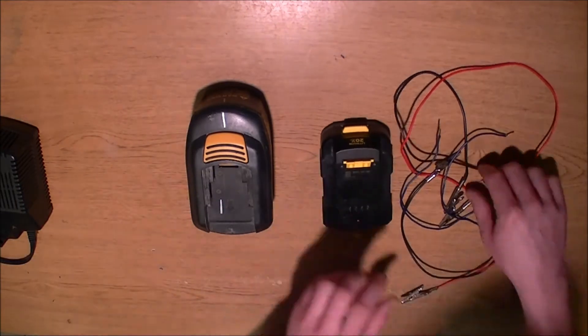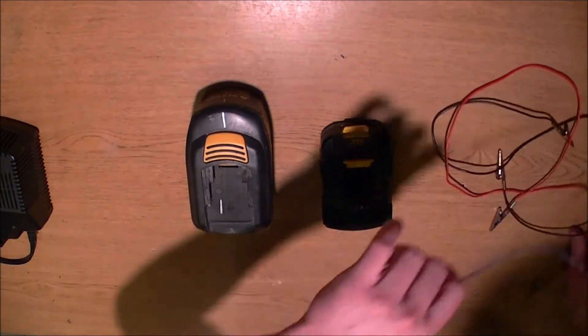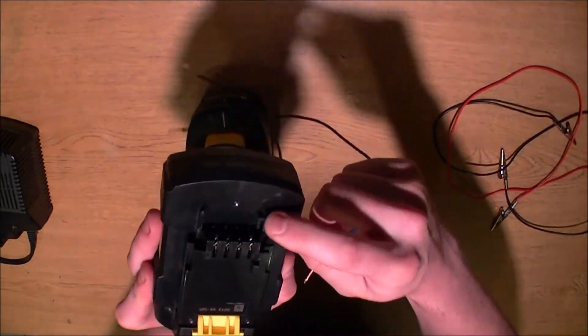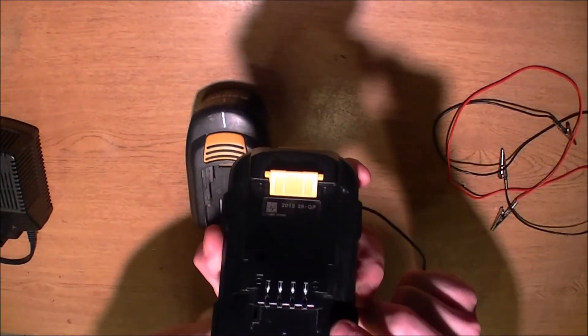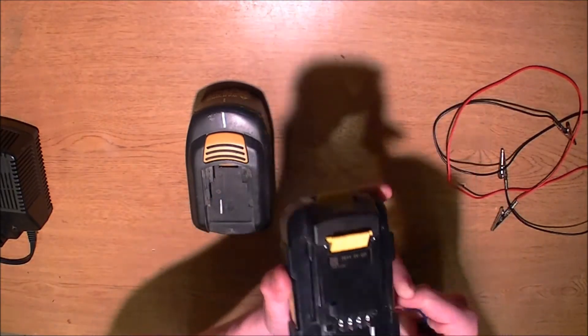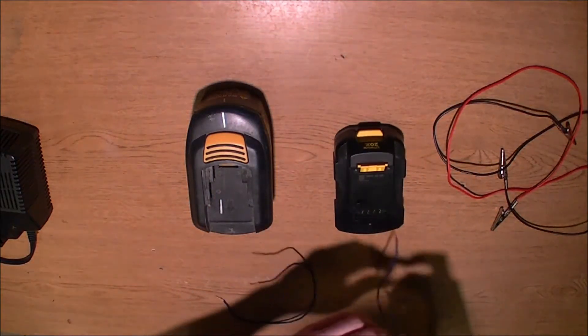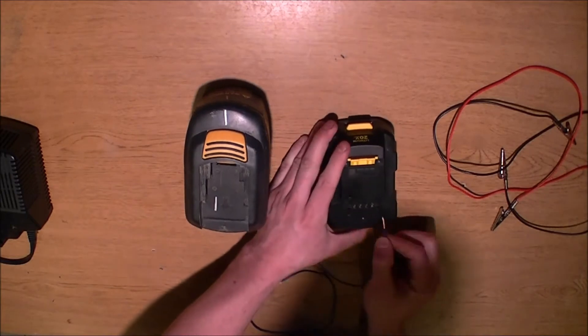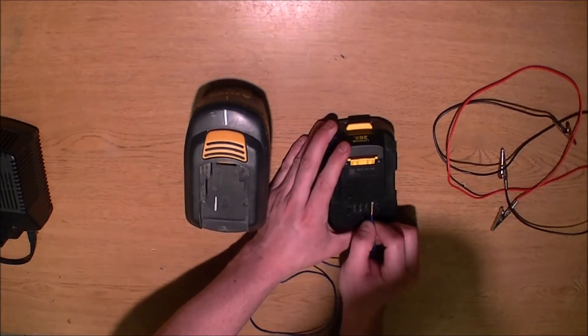Alright, so first thing we're going to do on this particular battery it has a negative and positive. This side's positive. This side's negative. I'm just going to slide the wires in positive and negative. Alright, so on this one we got positive right here sliding it in. There's positive.